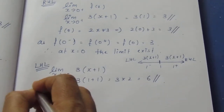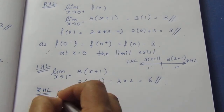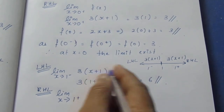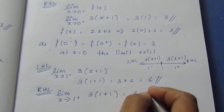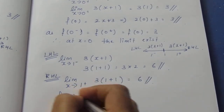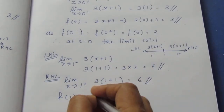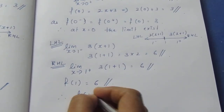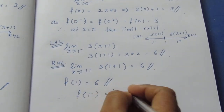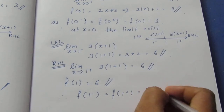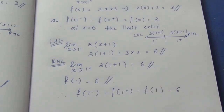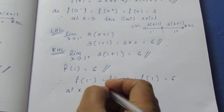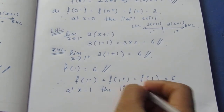For the right-hand limit, limit x tends to 1 positive of f(x) equals 3 into (x plus 1). Substituting x equals 1, we get 3 into (1 plus 1) equals 6. Therefore, f(1 minus) equals f(1 plus) equals 6. At x equals 1, the limit exists and equals 6.